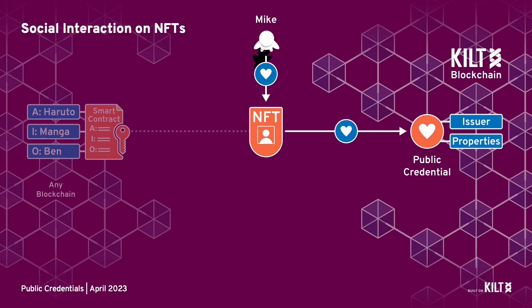With KILT, Mike can add a comment or a like to the NFT. This is written to the KILT blockchain as a public credential, containing information about the issuer, Mike, and the properties — a like. The credential is linked to this NFT no matter what blockchain the NFT is on.